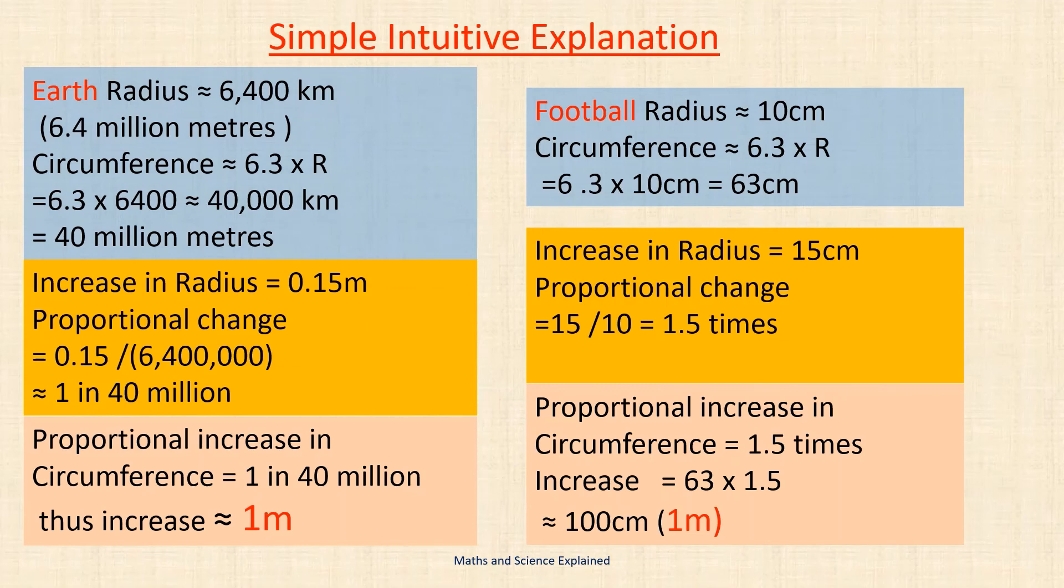Thus for any sized circle a radius increase of 15 centimeters results in an increase in circumference of approximately 1 meter. Another way of looking at it is that as the size of a circle increases a 15 centimeter increase in radius becomes a smaller proportional increase. However when this smaller proportional increase is applied to a larger value for the circumference the resulting answer for the length remains constant.